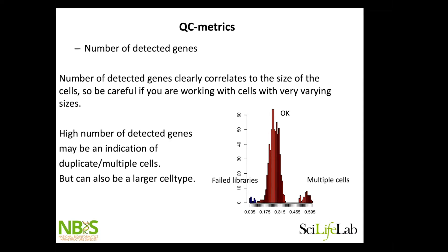How many genes do we detect per cell? The issue is that it clearly correlates with the size of the cells. So if we have a homogeneous population and you have a really high number of genes in certain libraries, they are most likely doublets. In fact, in one experiment they pooled 10 cells on the same Smart-seq2 plate and you see a really distinct pattern of doublets or multiples. And if you have very few detected genes, it's most likely a failed library. So I would remove both the high and low end if I have a homogeneous sample.